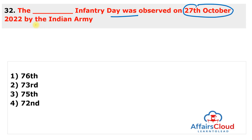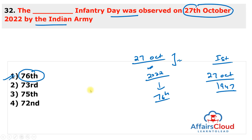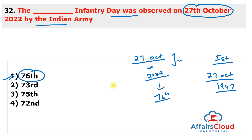Next question: which Infantry Day was observed on 27th October 2022 by the Indian Army? This was the 76th Infantry Day. The Indian Army annually observes 27th October as Infantry Day to commemorate the contributions of the Infantry, the largest fighting arm of the Indian Army. The day marks the anniversary of the first military event of independent India, which took place in the Kashmir Valley against Pakistani invaders on 27th October 1947. In 2022, the Indian Army and Air Force celebrated 27th October as Shaurya Divas, as the day also marks the golden jubilee celebration of the Kashmir air base of the Indian Air Force.